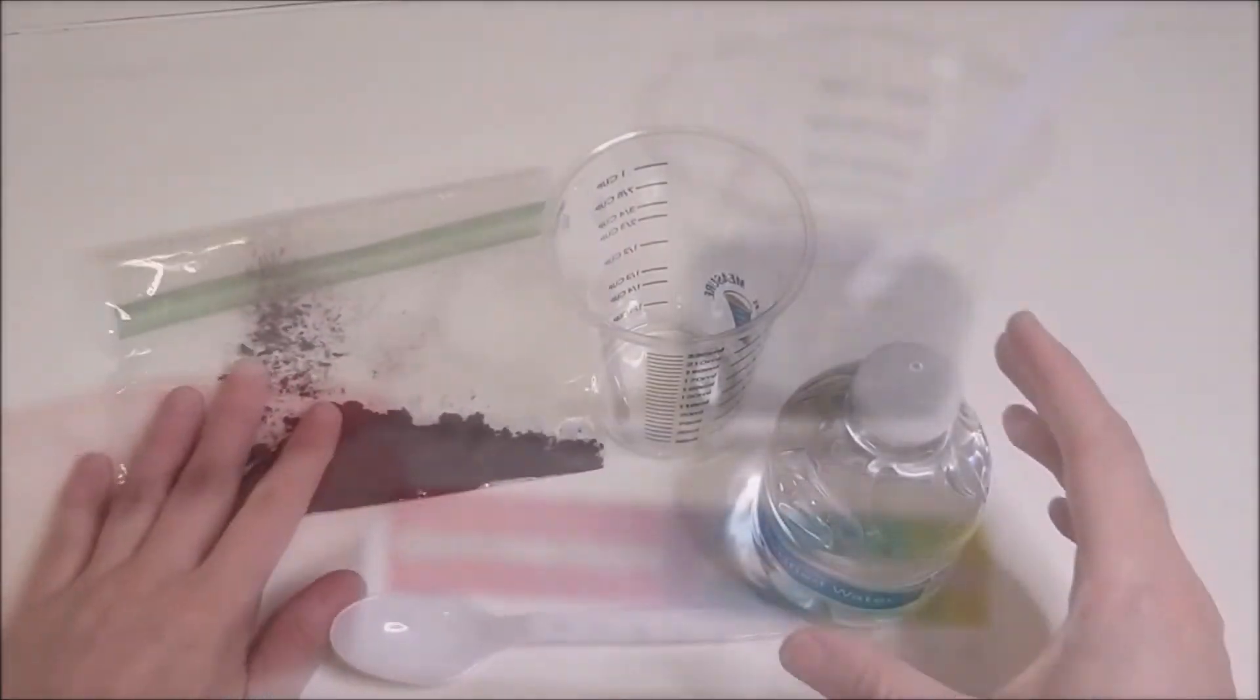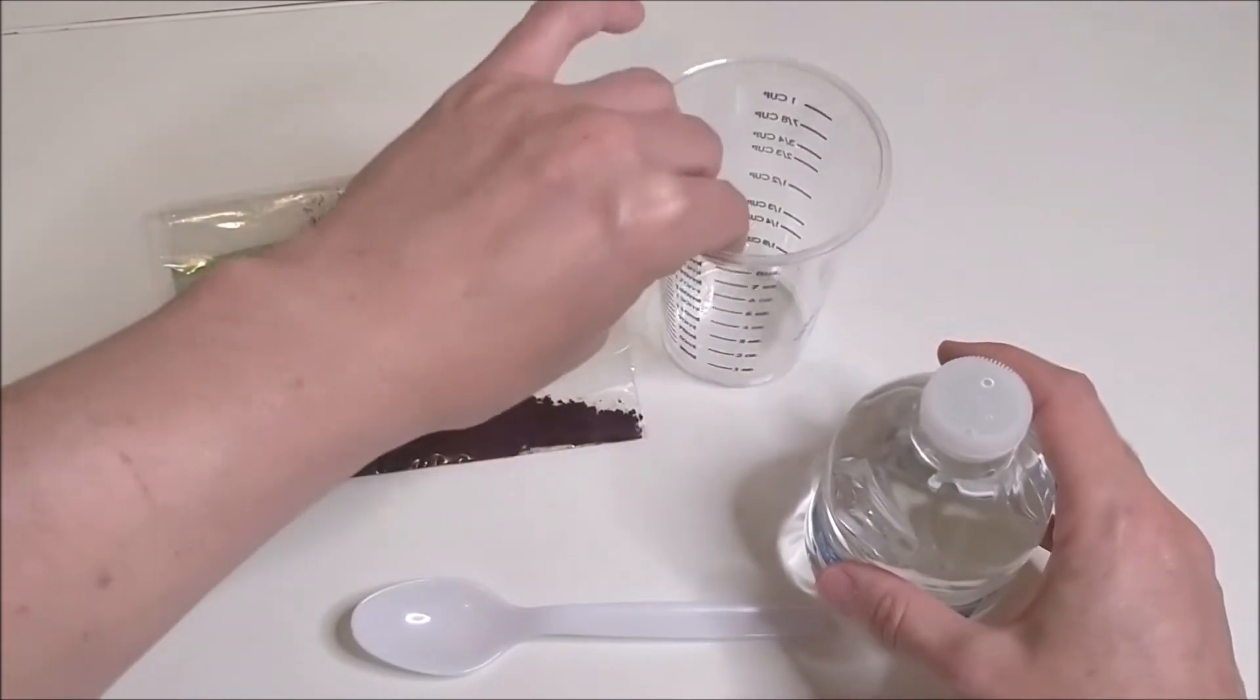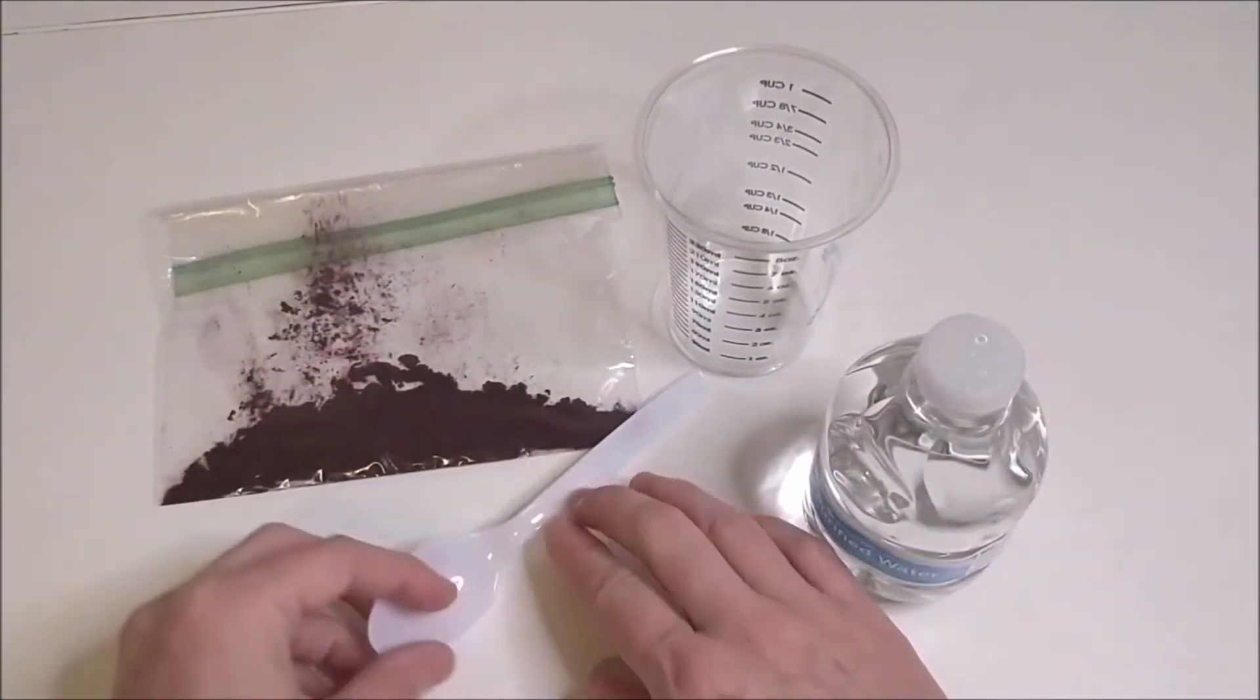Okay, let's get started. You'll need your measuring cup, your water, your cabbage powder, and the pH guide.